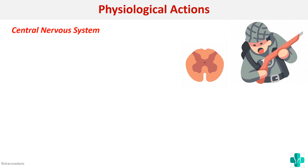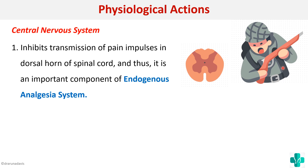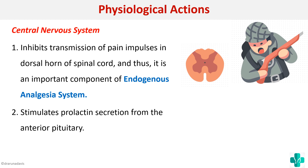Now we will see the physiological actions of serotonin on the CNS. For example, in soldiers out in war, they do not seem to mind their injuries — that is because of an endogenous analgesia system. Serotonin plays a very important role in this system; it inhibits the transmission of pain impulses in the dorsal horn of the spinal cord. It also stimulates prolactin secretion from the anterior pituitary.